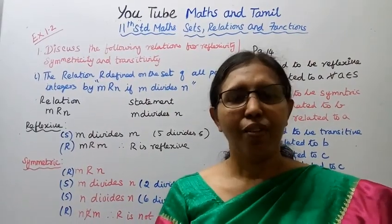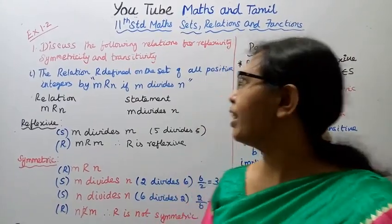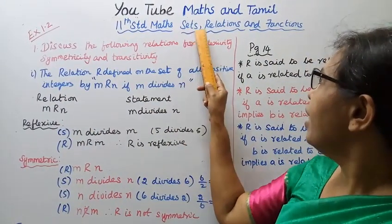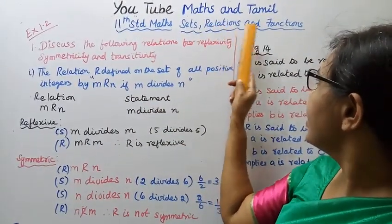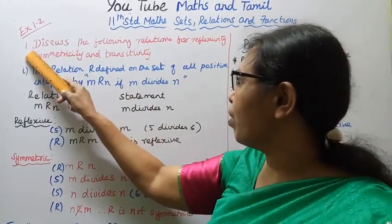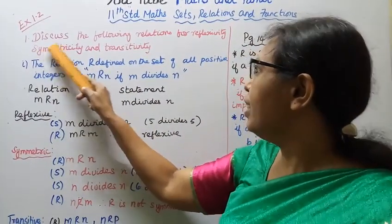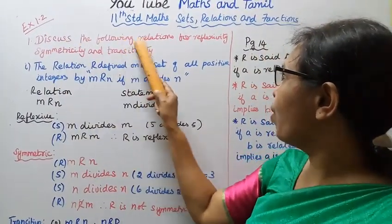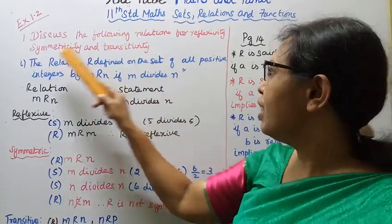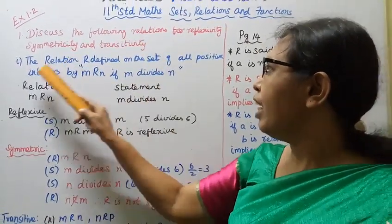Hello students, welcome to Max and Tamil channel. 11th standard Maths, Sets, Relations and Functions, Exercise 1.2, Sum 1(i). Discuss the following relations for reflexivity, symmetricity and transitivity.